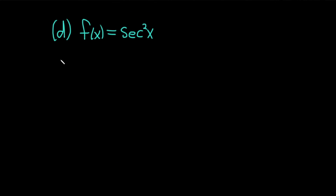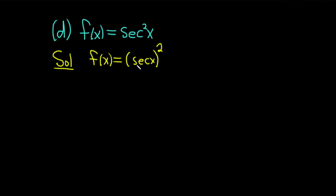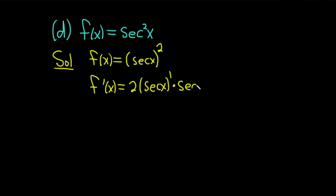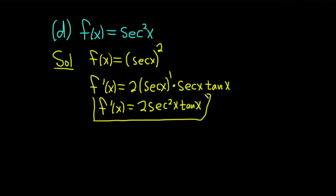Part d, f of x equals secant squared x. It might be a good idea to first rewrite this one for added clarity. Whenever you have secant squared, you can write it as secant x in parentheses raised to the 2. That is exactly the same thing, so now you can clearly see that the inside function is secant and the outside function is a power function. So f prime of x — we take the derivative of the outside, bring down the 2, leave the inside untouched: secant x to the first power. And now we multiply by the derivative of the inside. The derivative of secant is secant tangent. Secant times secant is secant squared, and we're left with the tangent of x. So f prime of x is equal to 2 secant squared tangent x.